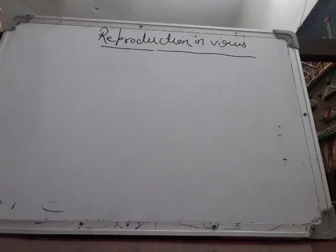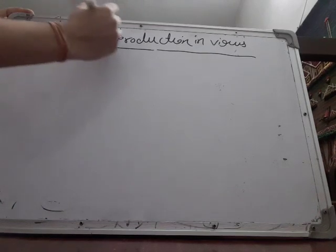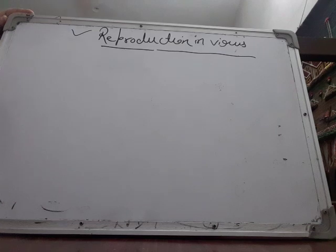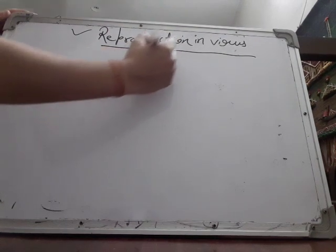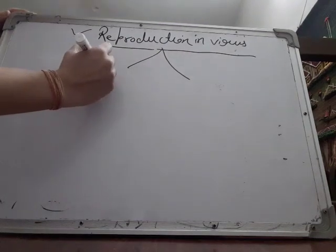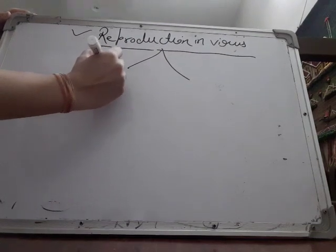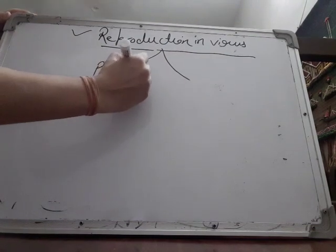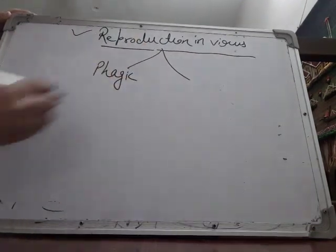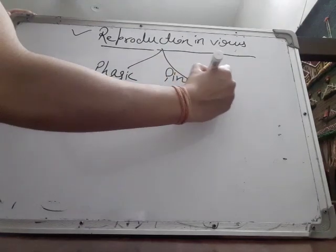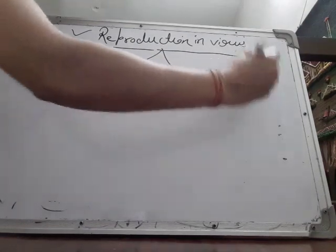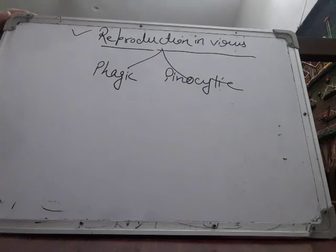Good morning students. Today's topic is reproduction in viruses. How do viruses reproduce? There are two ways for a virus to reproduce: one is the phagic type of reproduction and the other is the phenocytic type of reproduction.